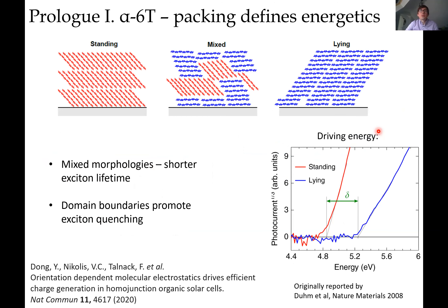We looked at this from a spectroscopy point of view and did standard transient absorption measurements. We realized that in a pure film of alpha-6T — no interface, no doping, nothing — we still see conversion of excitons to charges. This is raw data: a lot of charge is generated very early, and even more charge is generated within 100 picoseconds, which is surprising since there should be no driving force to split excitons into separate electrons and holes.